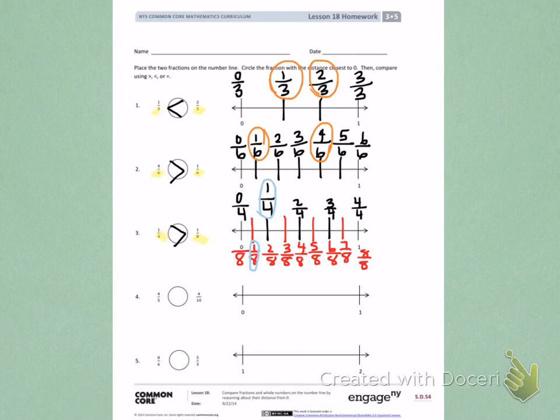On number 4, I see 4 fifths and 4 tenths. So you will need to create a number line that shows fifths on the top and tenths on the bottom. Then you will need to use that number line to help you compare.